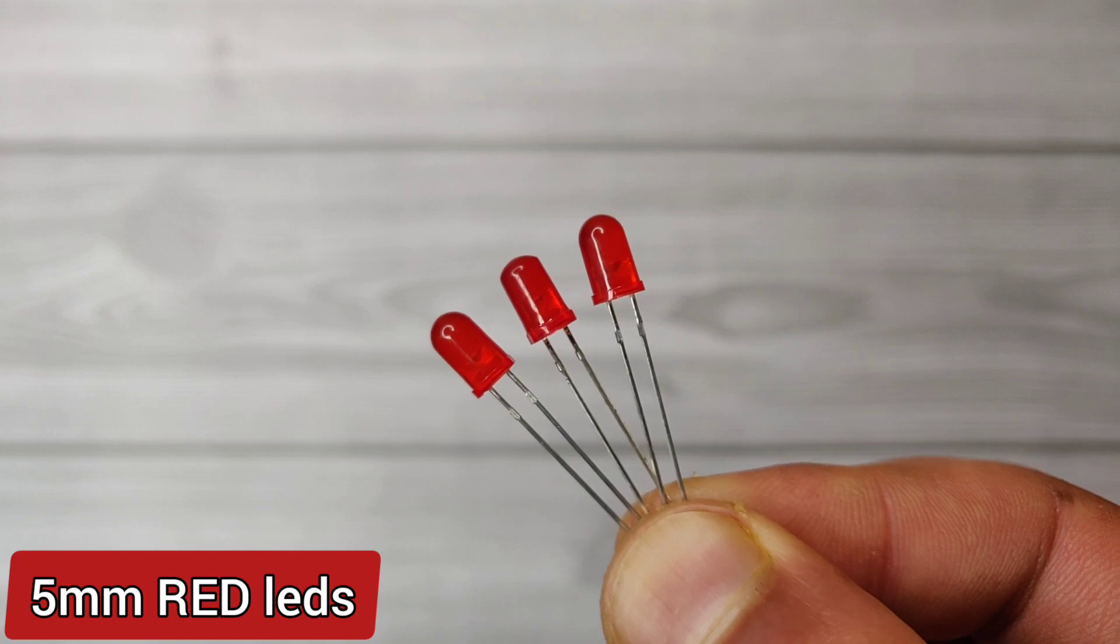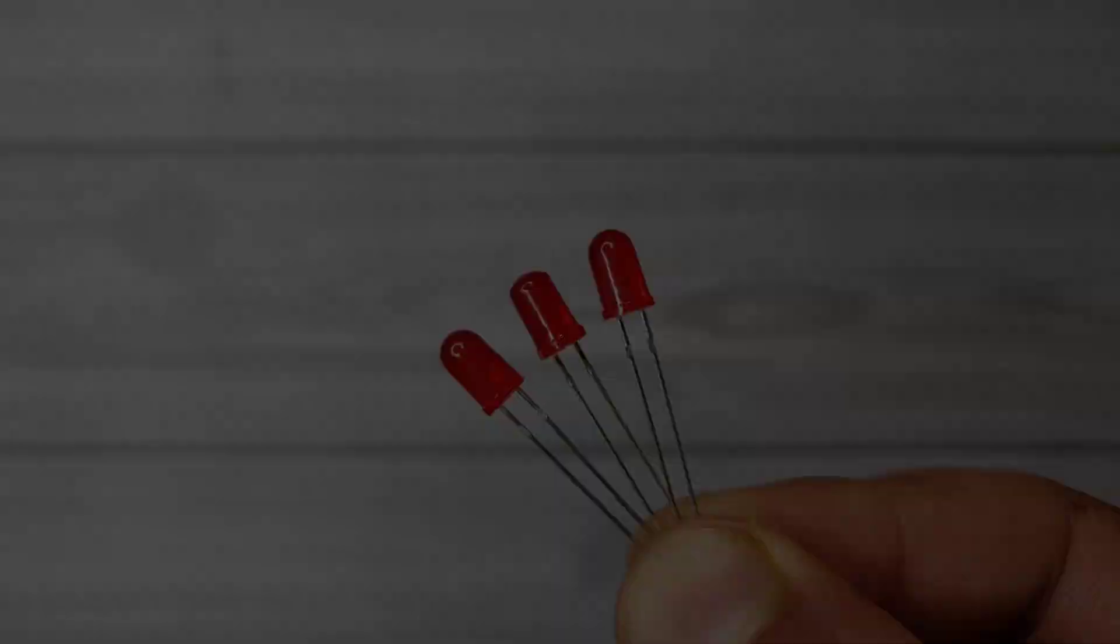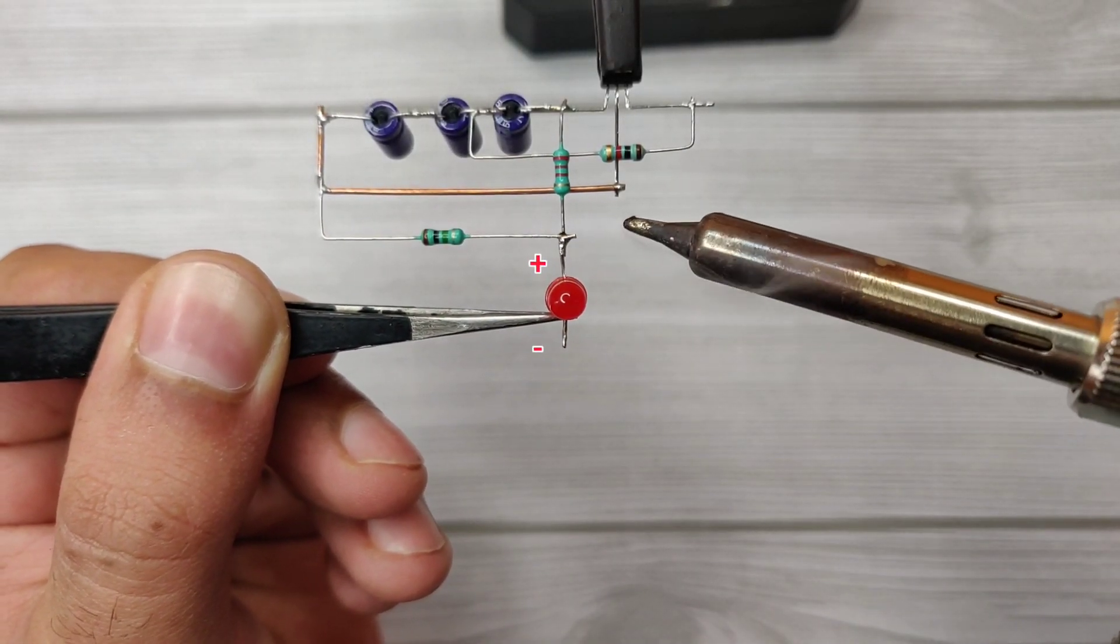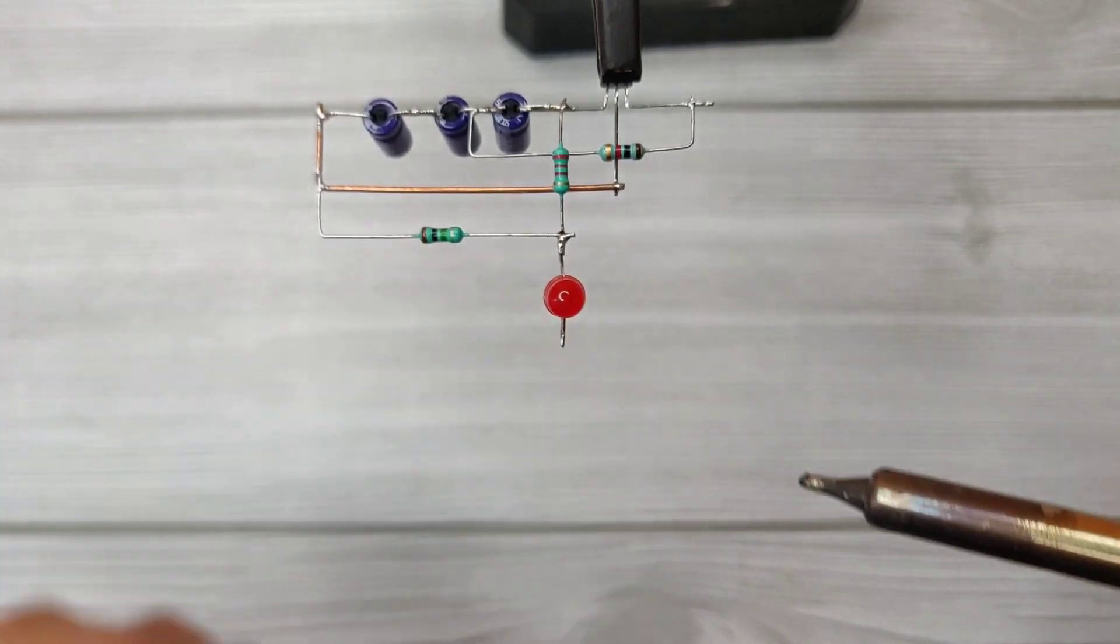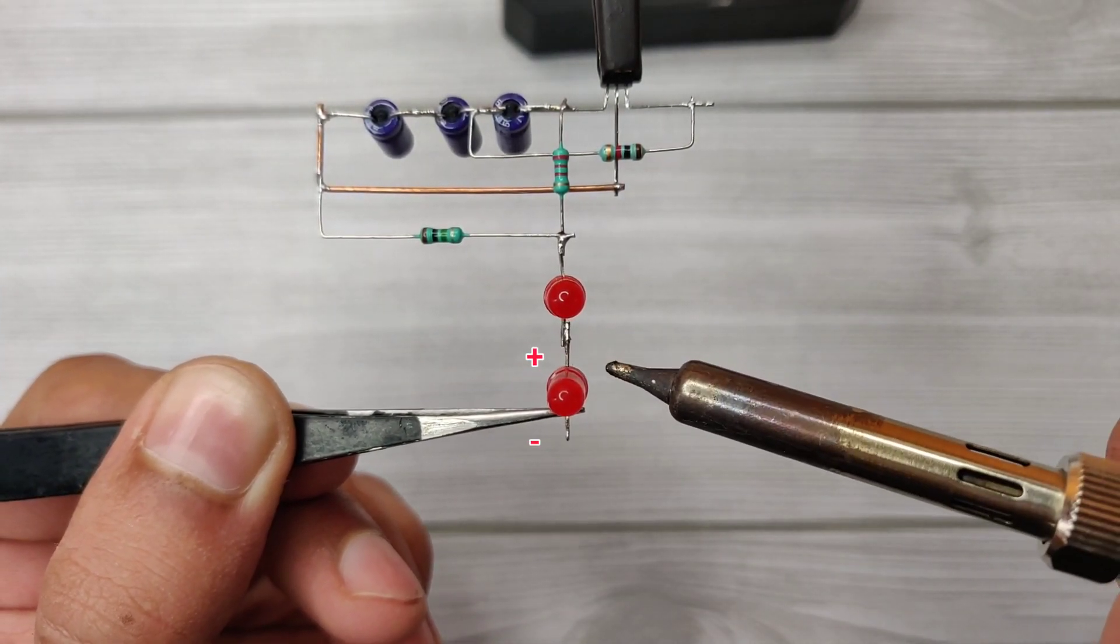Take three pieces of red LEDs. Solder the LED positive with the 2.2k resistor and solder the other two LEDs in series.